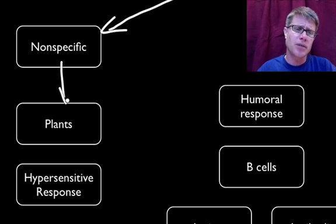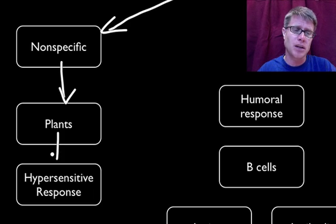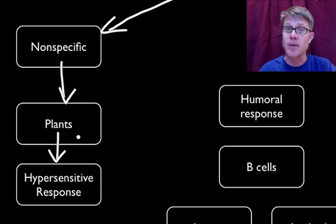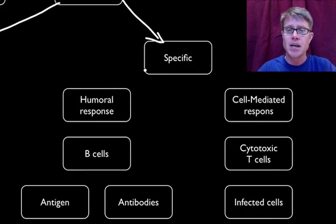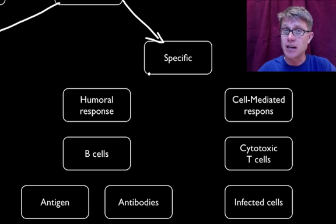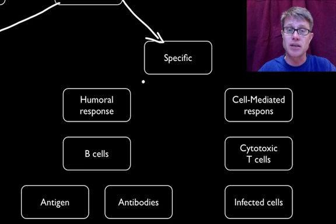We're probably not as familiar with plants and how they defend themselves. They use something called a hypersensitive response — they can sense a pathogen invading them. They also have cell walls that obviously protect them, but once they are invaded they have a pretty dramatic defense mechanism. In us we use a specific defense, identifying actual pathogens that have invaded us and targeting them specifically.